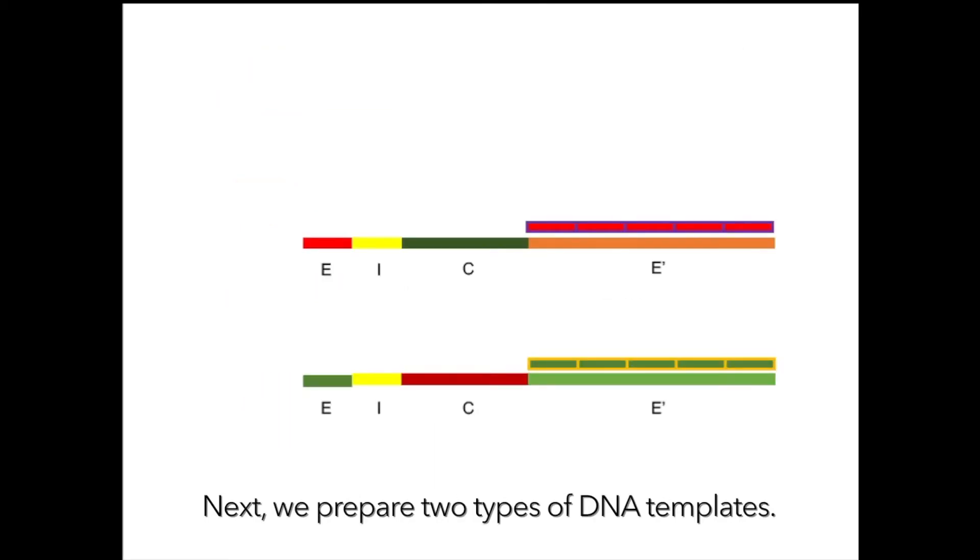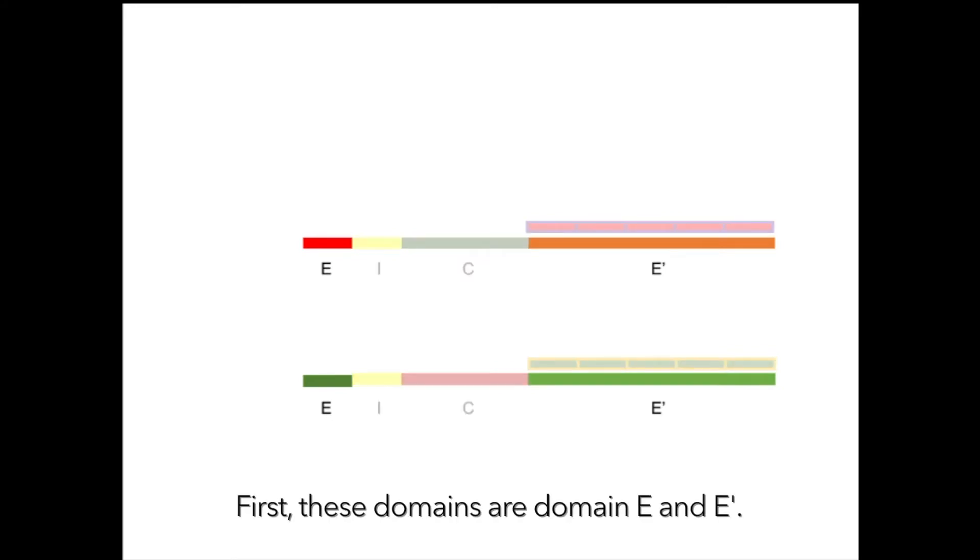Next, we prepare two types of DNA templates. What is the color of each DNA different? Different color DNA play different roles. First, these domains are domain E and E prime. Domain E and E prime are amplification devices.